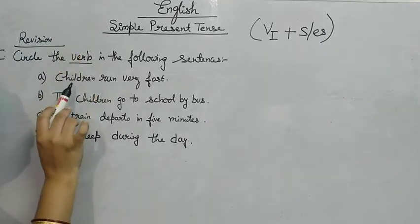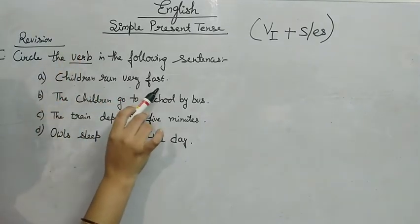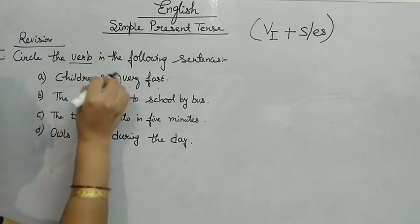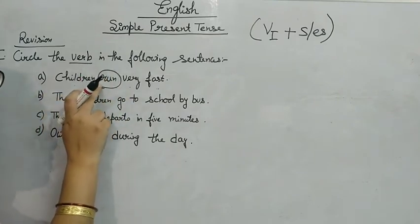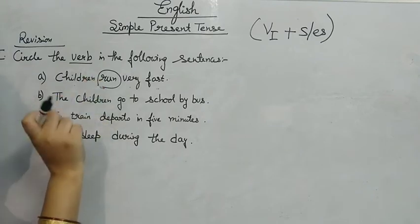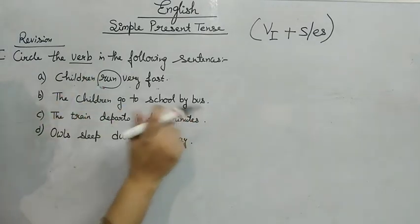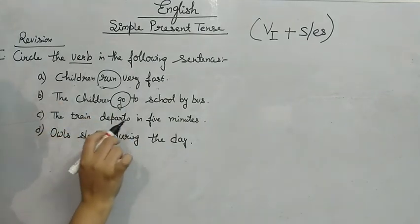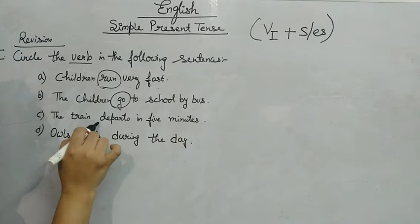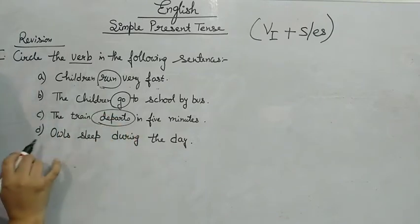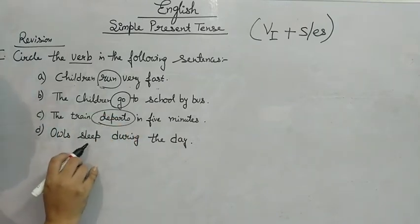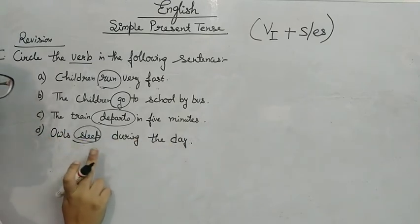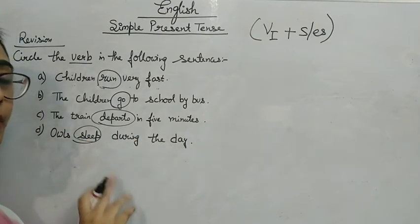First sentence: children run very fast — 'run' is the verb. Second: the children go to school by bus — 'go'. Third: the train departs in five minutes — 'departs'. Fourth: owls sleep during the day — 'sleep'. All of these are the verbs.